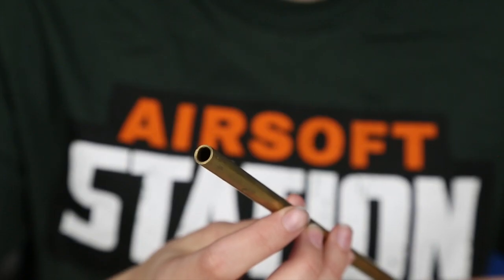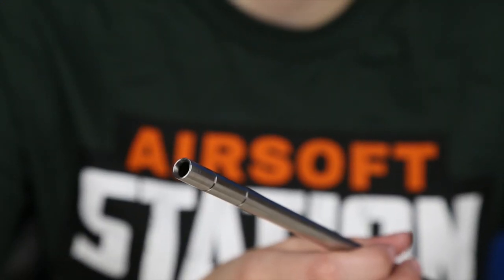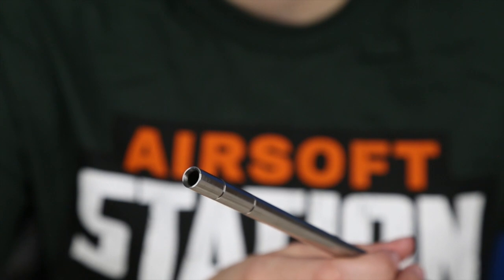The next step is the brass barrel. Heavier in weight, less likely to scratch or bend. Finally, there's steel. Stronger, harder to scratch, and usually highly polished on the inside, but heavier.